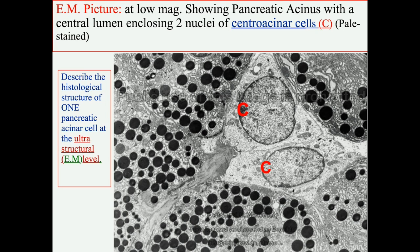This is an EM picture showing the ultrastructural features of the cells of the pancreatic acinus as well as the lumen. These cells are characterized by having apical membrane-bound electron-dense zymogen granules, which is typical for serous cells. In the lumen of this serous acinus you can see central acinar cell nuclei. The presence of these cells in the lumen of the serous acinus denotes that it is a pancreatic acinus.